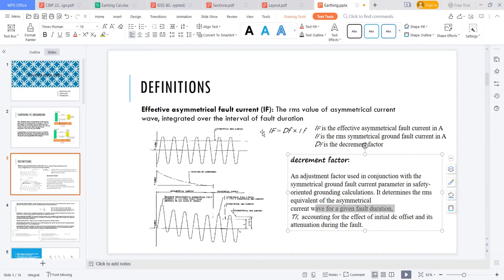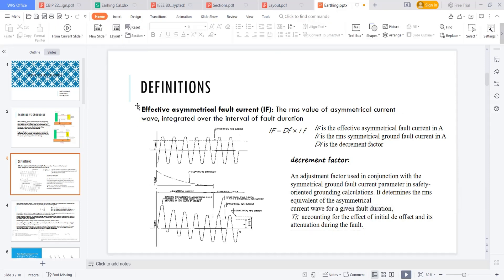This asymmetrical current also depends upon the X/R ratio. That is a conclusion from this - this is asymmetrical fault current.